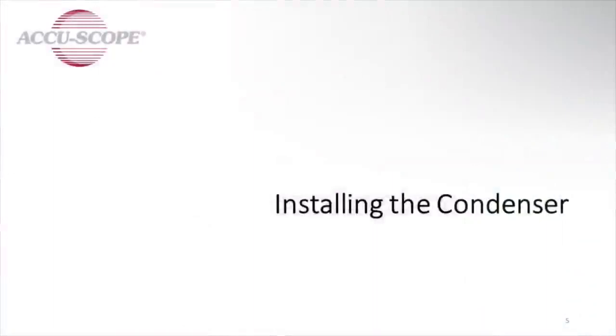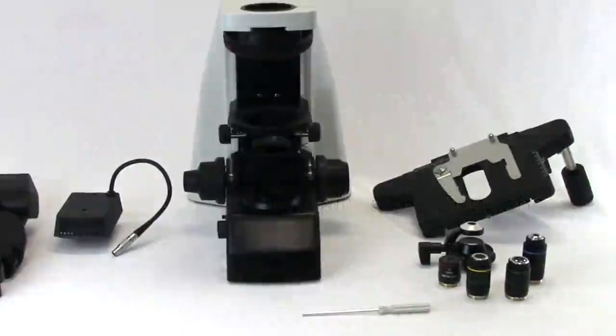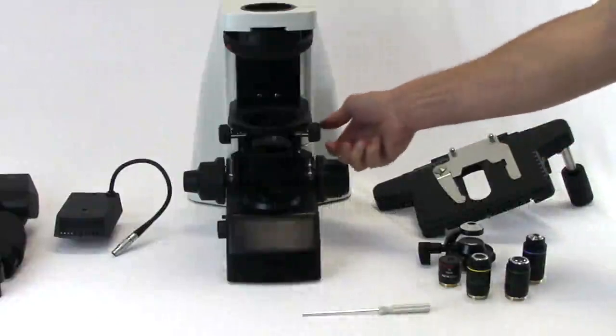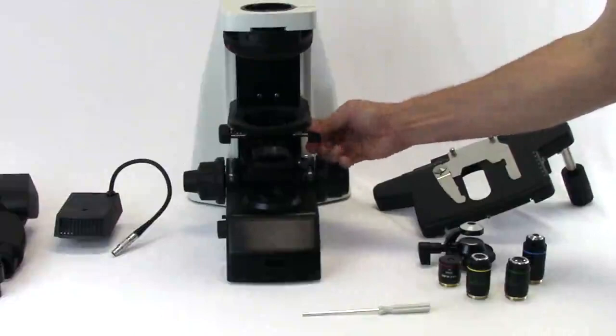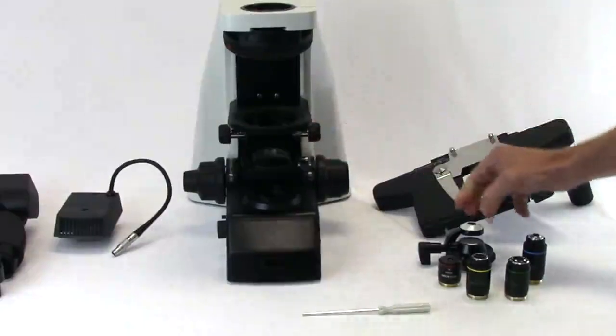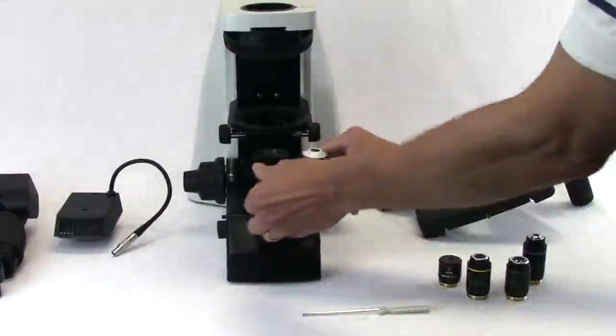Installing the condenser. Lower the condenser carrier to its lowest position by turning the condenser knob toward the front of the microscope. Loosen the condenser lock screw with the hex wrench.